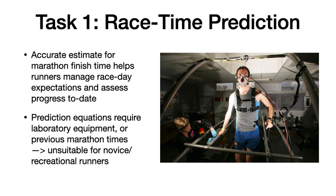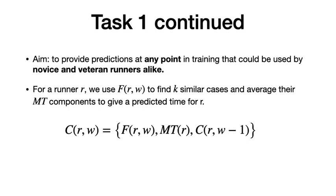The first task is race time prediction. Accurate marathon time estimates help runners manage race-day expectations and assess training progress. Typical prediction equations require laboratory equipment such as VO2 max testing, or previous marathon times, making them unsuitable for novice runners. Our aim is to provide predictions at any point in training, usable by novice and veteran runners alike. For a runner OR, we find k similar cases and average their marathon times to give a predicted time.